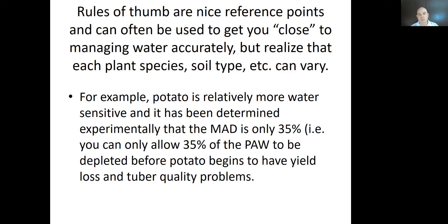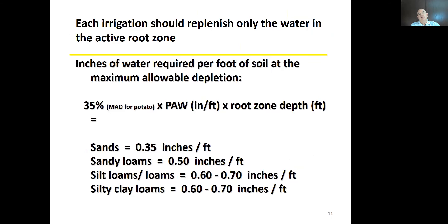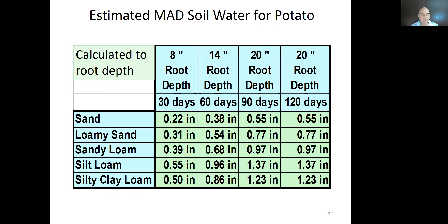Each irrigation zone should only replenish water in the active root zone. For potato, the calculation is: MAD (35%) times plant available water in inches per foot, multiplied by root zone depth. For sandy soils that's about 0.35 inches per foot, and we can look those values up. This tells us how much of a foot of soil is MAD or plant available water.